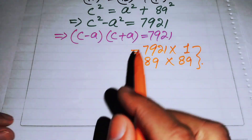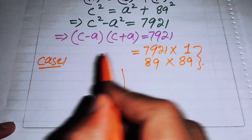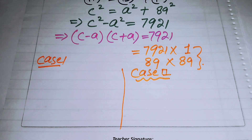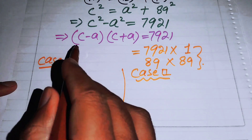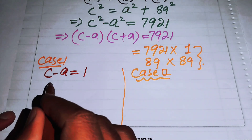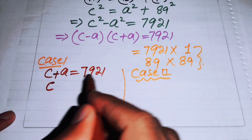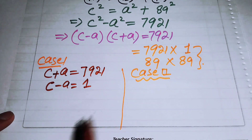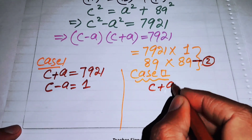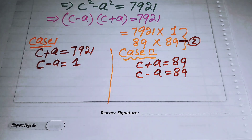We divide the problem into two cases. In Case 1: c + a = 7921 and c - a = 1. In Case 2: c + a = 89 and c - a = 89.